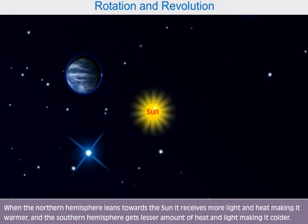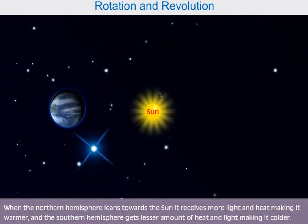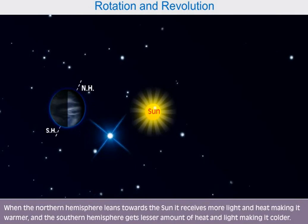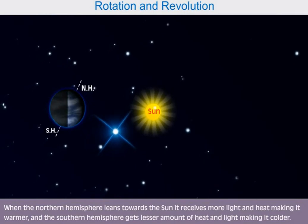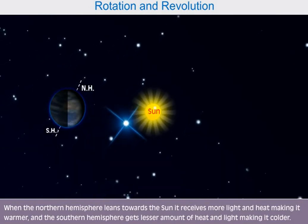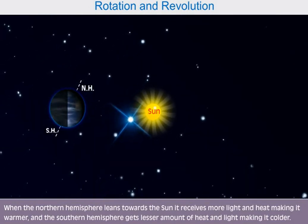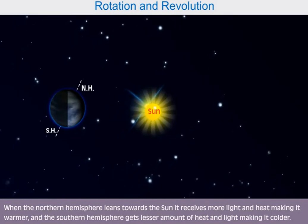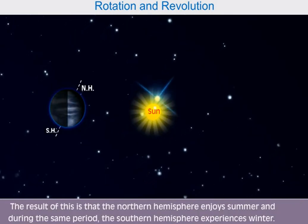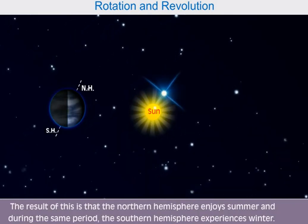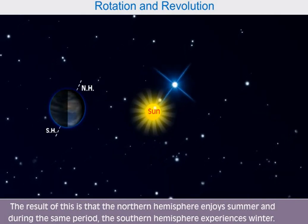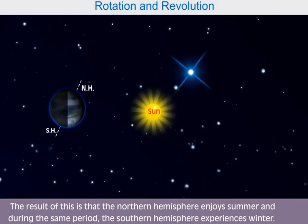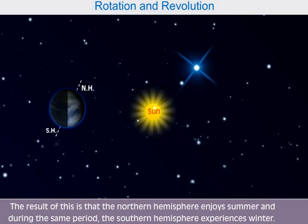When the Northern Hemisphere leans towards the Sun, it receives more light and heat, making it warmer, and the Southern Hemisphere gets a lesser amount of heat and light, making it colder. The result of this is that the Northern Hemisphere enjoys summer, and during the same period, the Southern Hemisphere experiences winter.